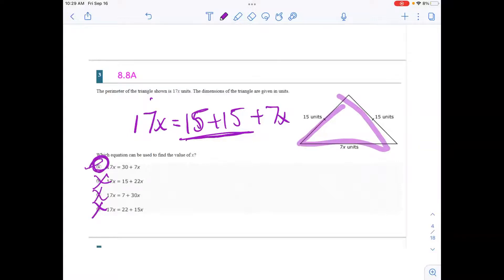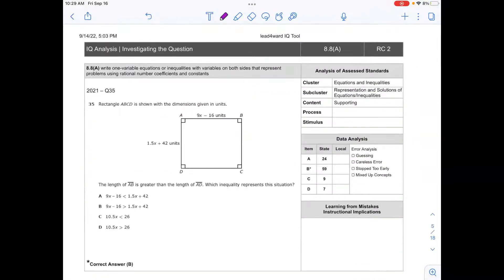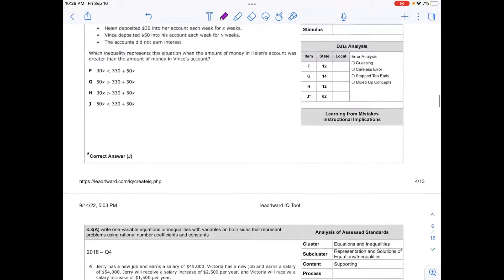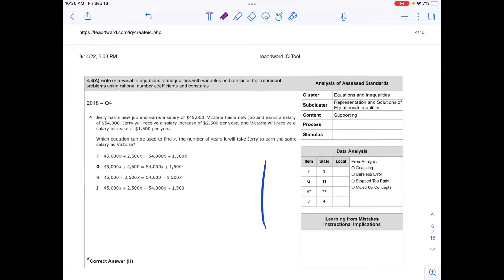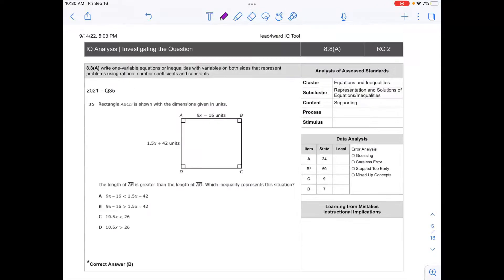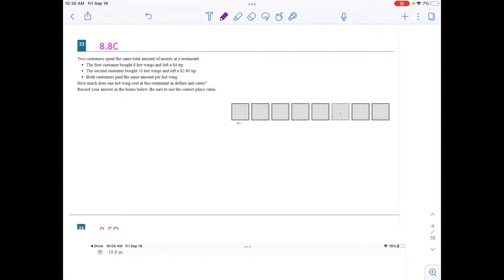This one, they just had to write an equation. And I want to show you what it has looked like in the past. Those were both inequalities, so I'll skip past those. But this is an equation where they give them a word problem and students are needing to write an equation. Same thing, word problem, need to write an equation. 8.8C is where they are actually solving, writing, modeling. So let's take a look at this STAR release question from 2022 for 8.8C.